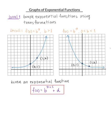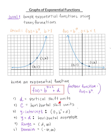Let's analyze an exponential function of the form f(x) = b^(x+c) + d. The parent function is f(x) = b^x. Here, d denotes the vertical shift units and c is the horizontal shift units. The y-intercept is at (0, b^c + d). The horizontal asymptote is y = d, the range is always (d, infinity), and the domain is all real numbers.